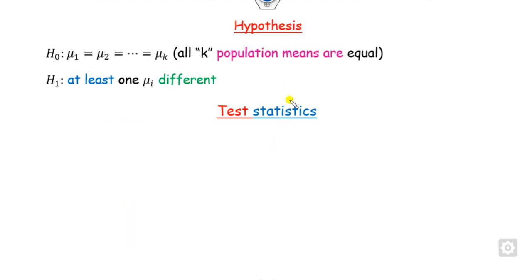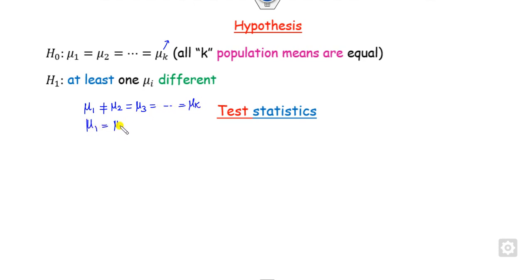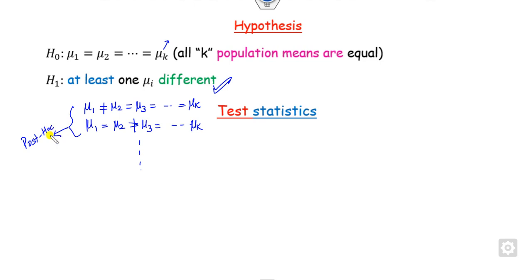The hypothesis for one-way ANOVA: if you have K population means, H0 states that all population means are equal. H1 states that at least one of them differs — for example, mu1 is not equal to mu2, or mu1 equals mu2 but not mu3, and so on. We can check which one differs based on the post hoc test.